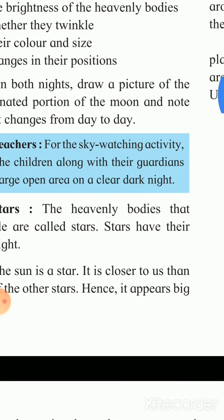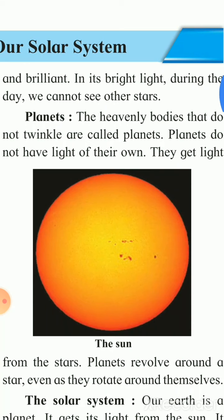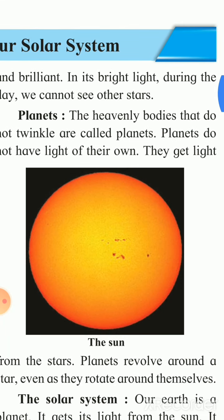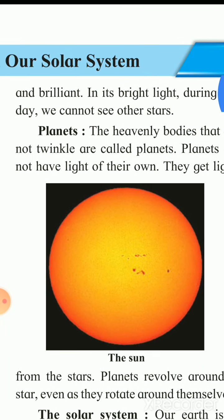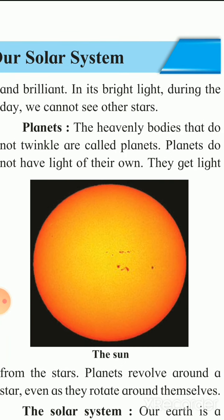The sun is bigger in size and brilliant. Because of its bright light, during the day we cannot see other stars. Since the sun is nearer to the Earth it has a bright light, and we cannot see the stars at daytime because of the sun. Now, the heavenly bodies that do not twinkle are called planets. The stars and the sun twinkle, but the planets do not.